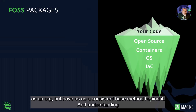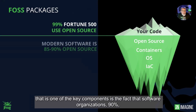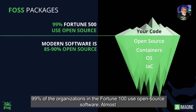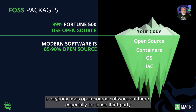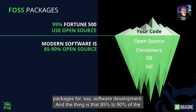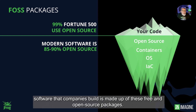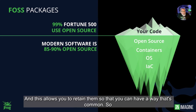One of the key components is understanding that 99% of Fortune 100 organizations use open source software. Almost everybody uses open source software, especially for third-party packages in software development. In fact, 85 to 90% of the software that companies build is made up of free and open source packages, and Artifactory allows you to retain them in a common way.